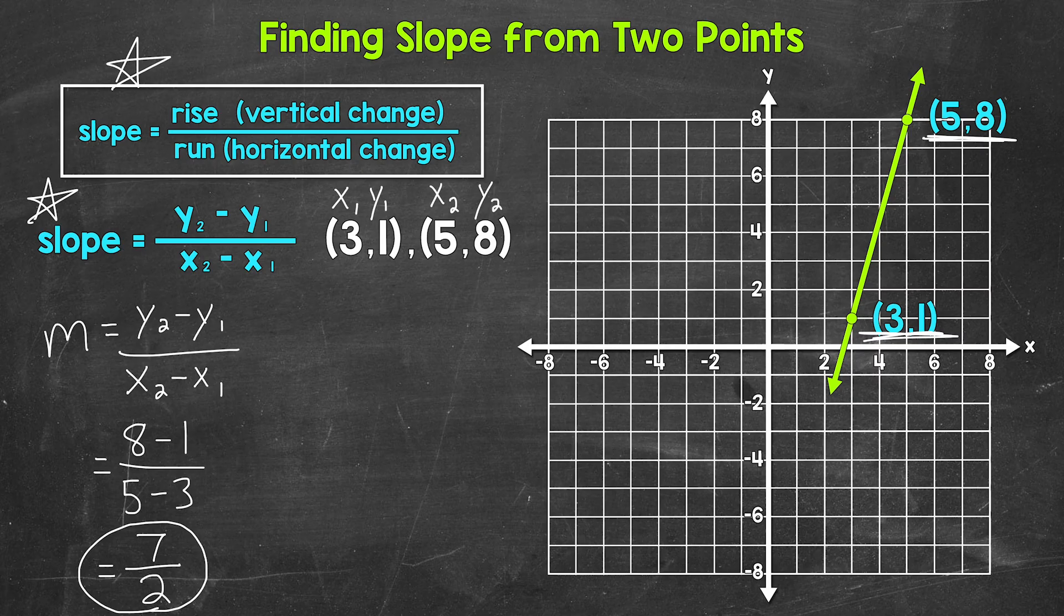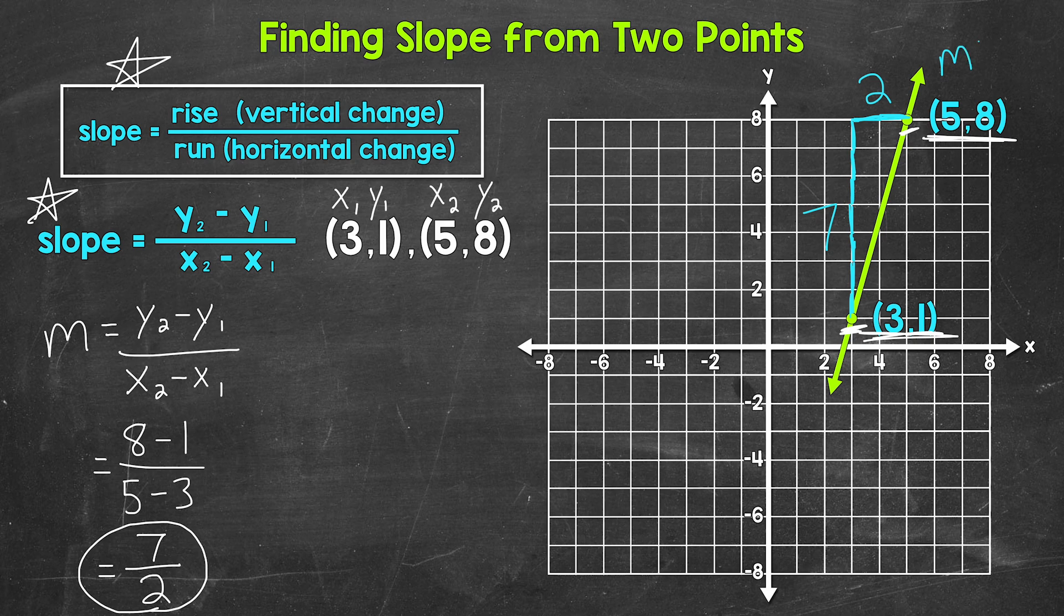Now we did not need the line on the graph to find the slope here. Because we were just able to use the points, the coordinates. But I wanted to include it to give us a visual of the slope. And show that counting units gives us the same slope. So taking a look at the line, let's work from left to right. So this point to this point and find the rise and the run. Let's start with the rise. So 1 unit, 2 units, 3 units, 4 units, 5 units, 6 units, 7 units in order to align with the other point. So the rise is 7. And then as far as the run, we need to go over 1 unit, 2 units. So the run is 2. So we get the same slope that way as well. So rise of 7, run of 2.